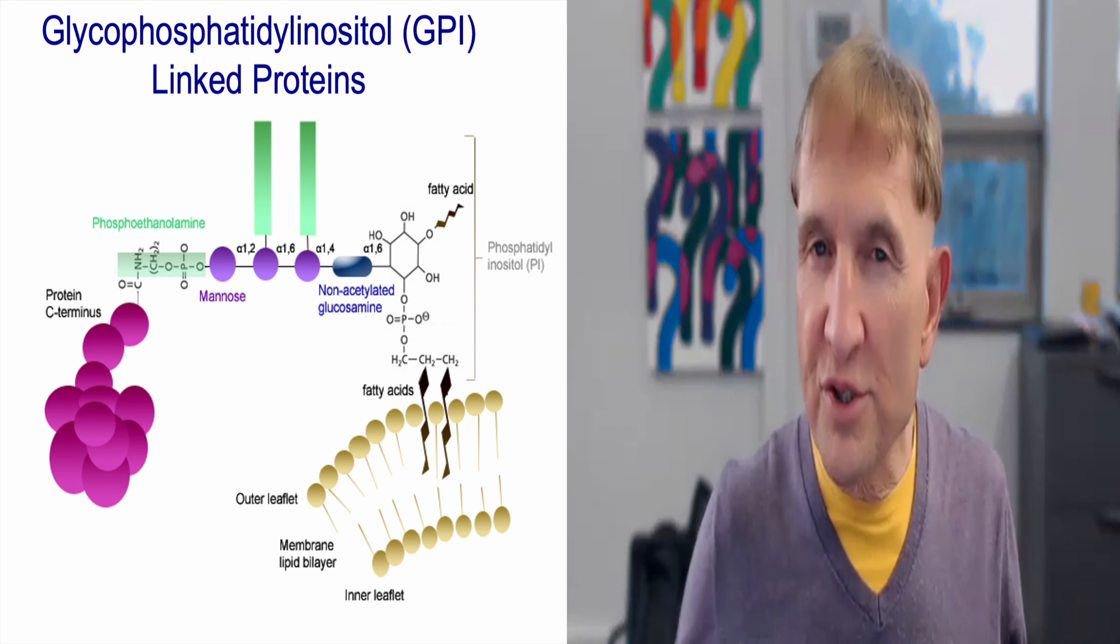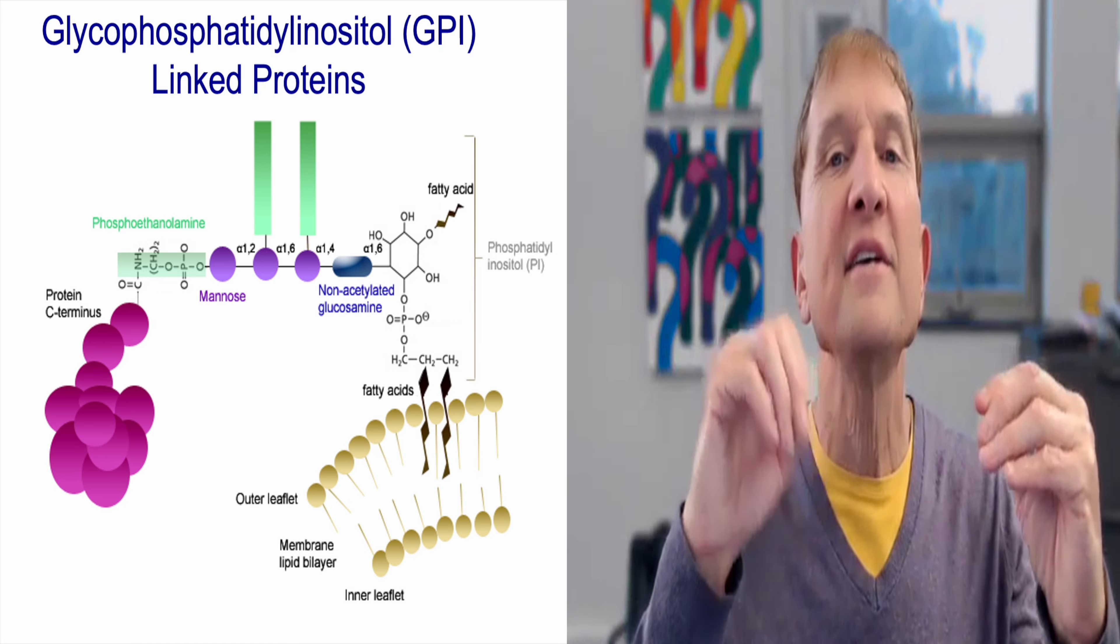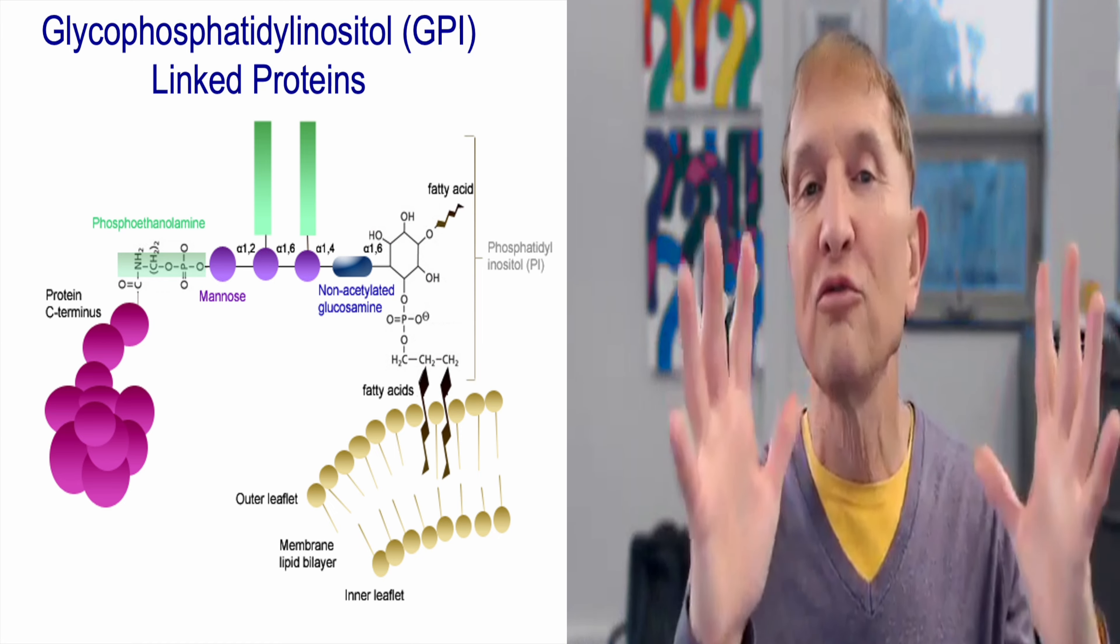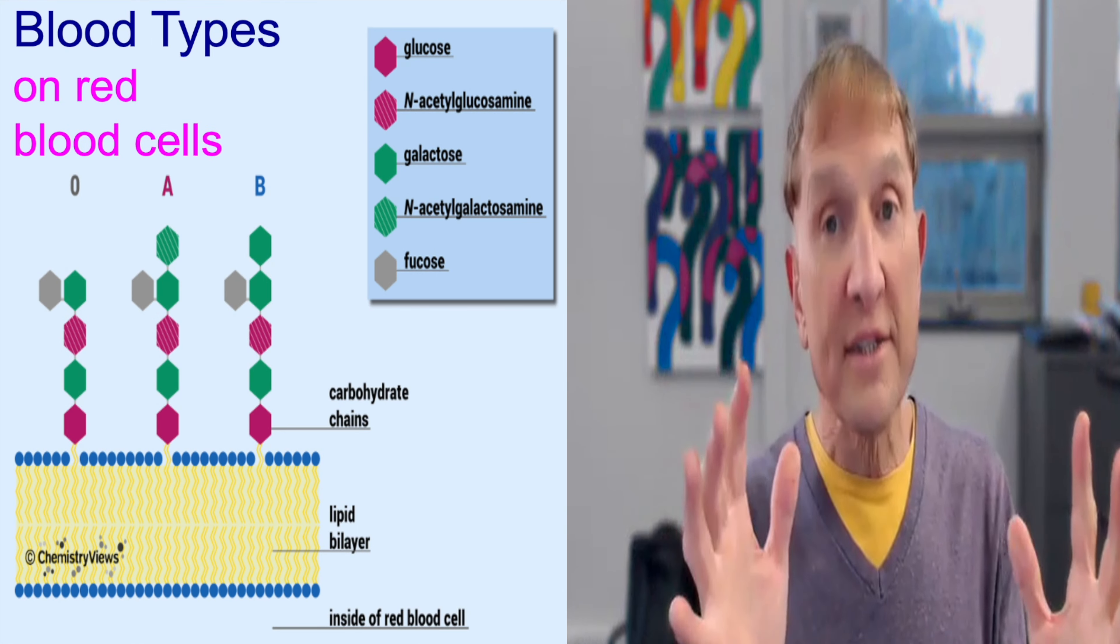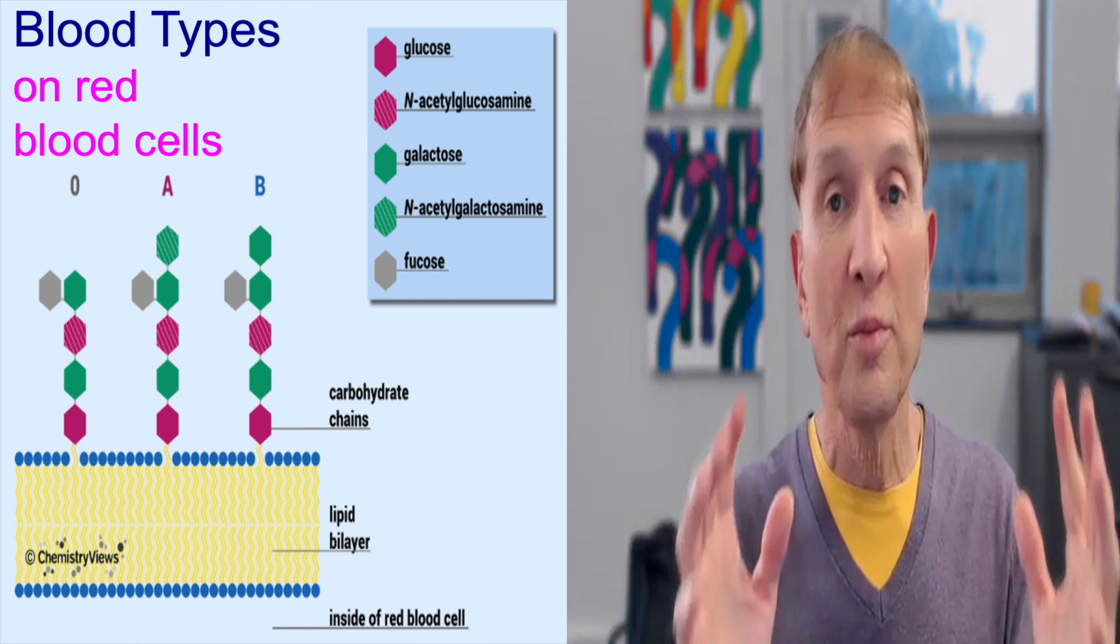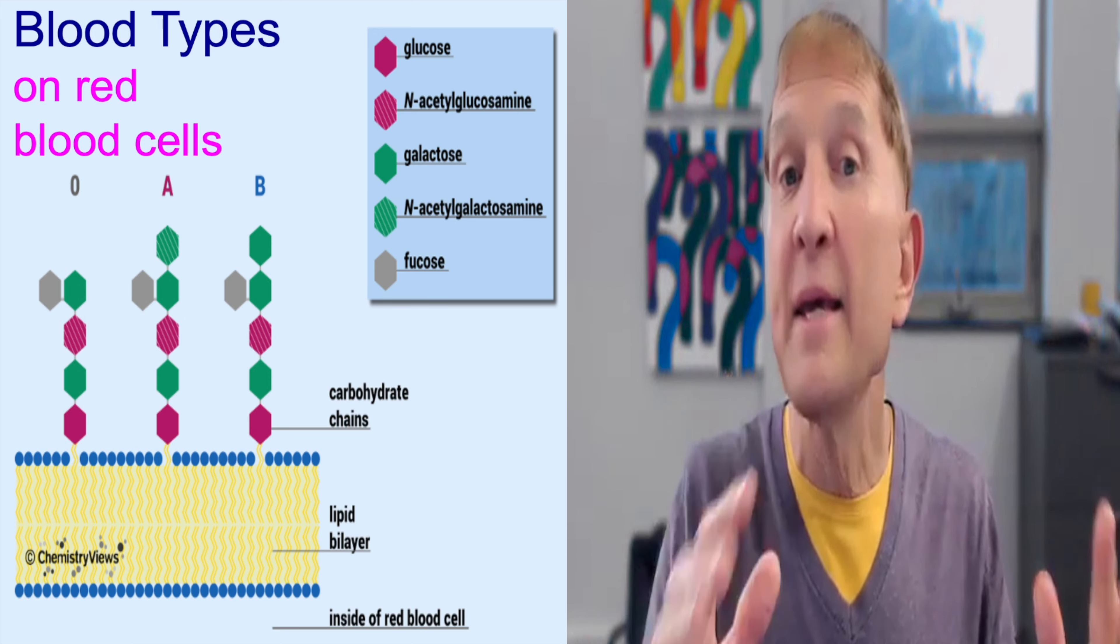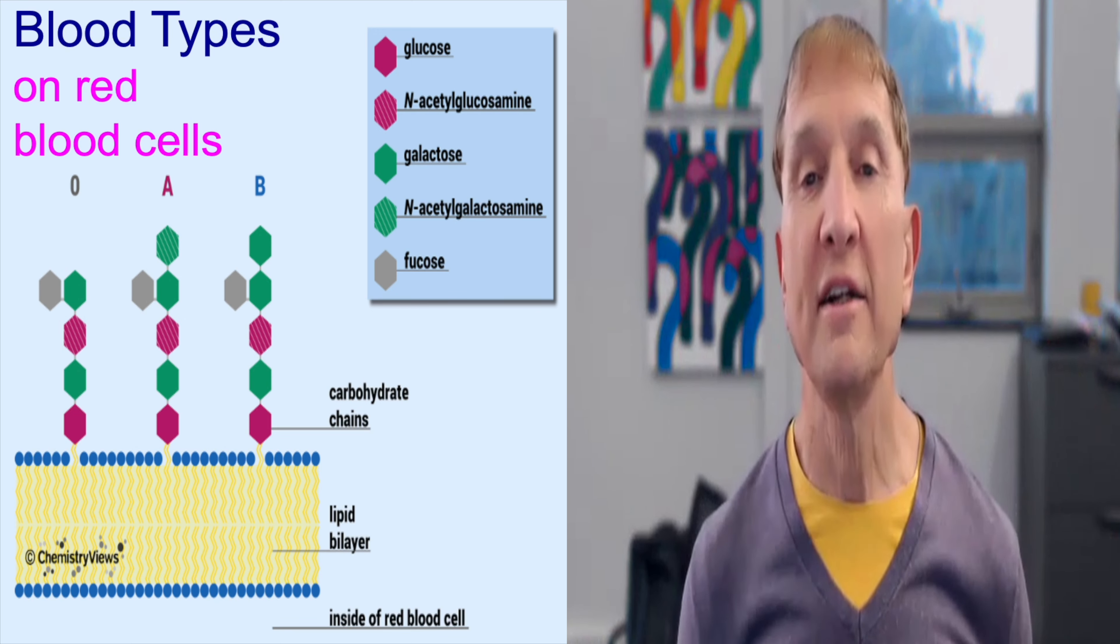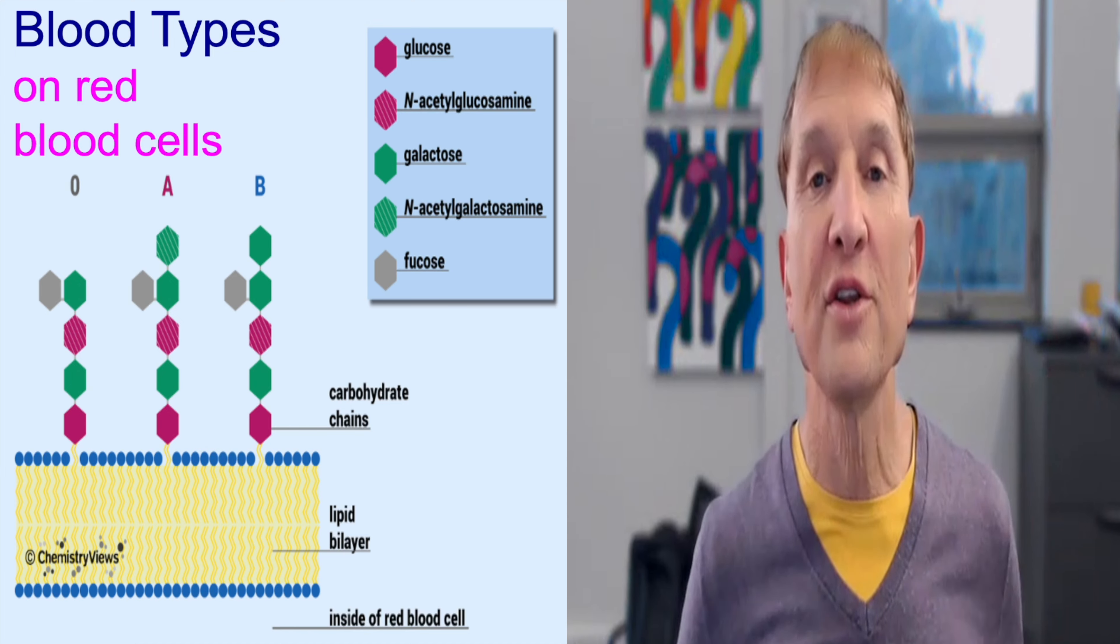So it looks as though the main function of these oligosaccharides is cell-cell recognition. And one example of that is blood types in human serum. Type A, type B, type AB, type O are defined by the composition of the oligosaccharides on the cell surface.